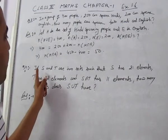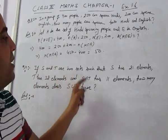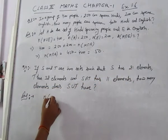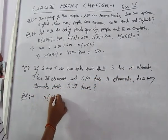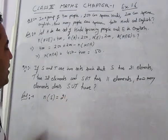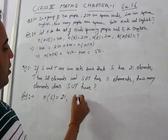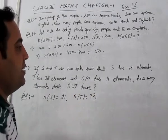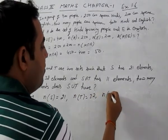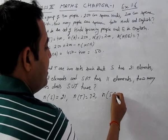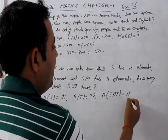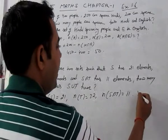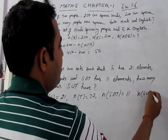Question number 4. If S and T are two sets such that S has 21 elements, T has 32 elements, and S intersection T has 11 elements, how many elements does S union T have? We have to find n(S∪T).